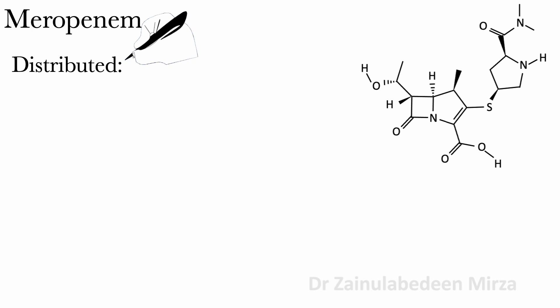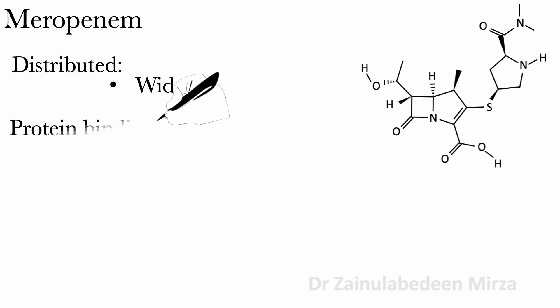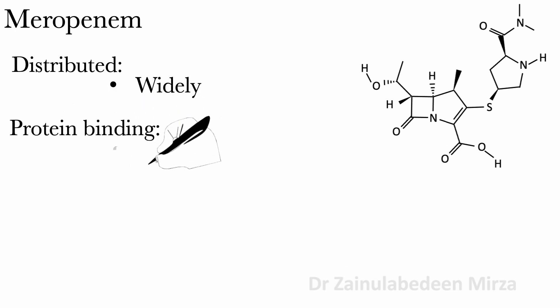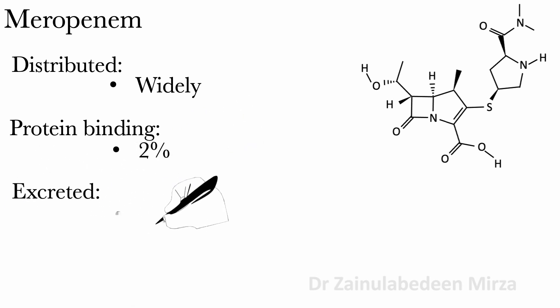Meropenem is widely distributed into tissue and body fluid. Protein binding of Meropenem is about 2%, and it is excreted in urine.